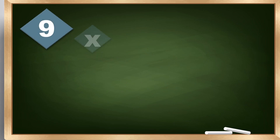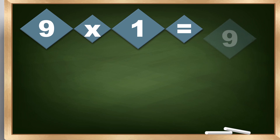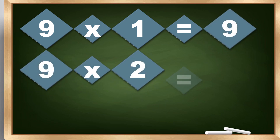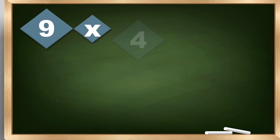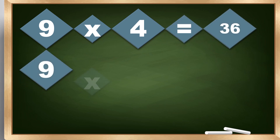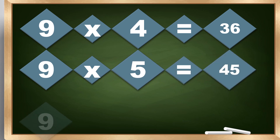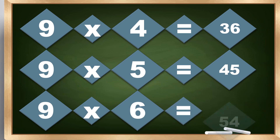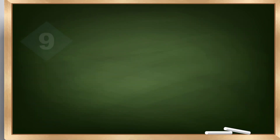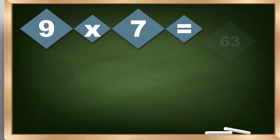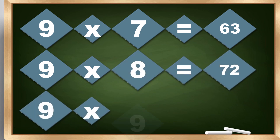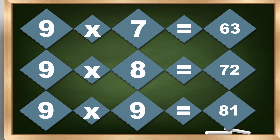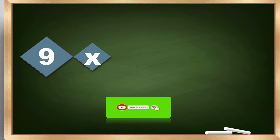Multiplying by 9. 9 times 1 equals 9. 9 times 2 equals 18. 9 times 3 equals 27. 9 times 4 equals 36. 9 times 5 equals 45. 9 times 6 equals 54. 9 times 7 equals 63. 9 times 8 equals 72. 9 times 9 equals 81. 9 times 10 equals 90.